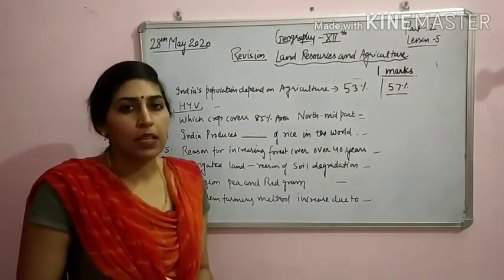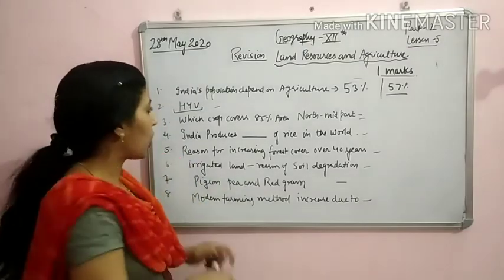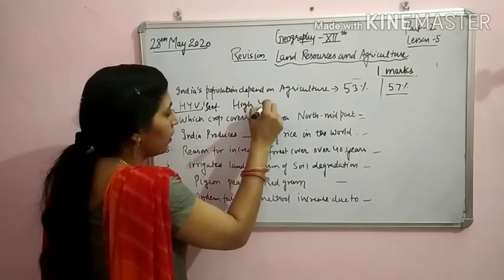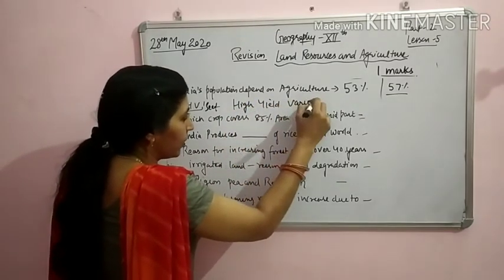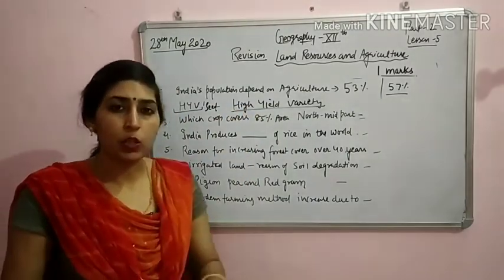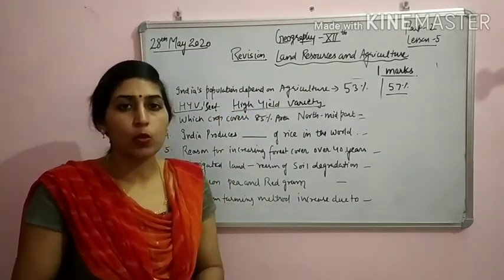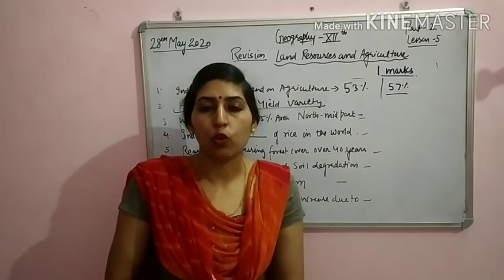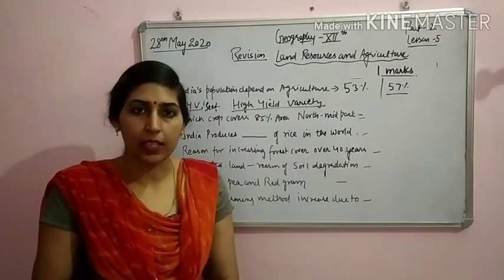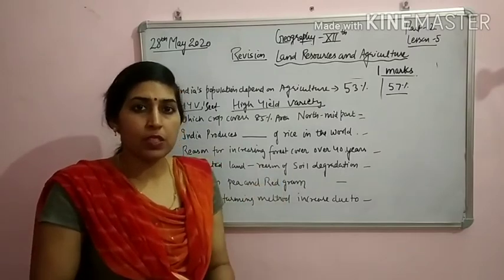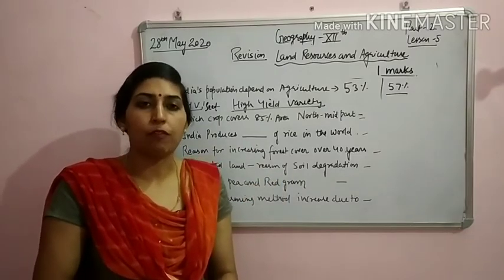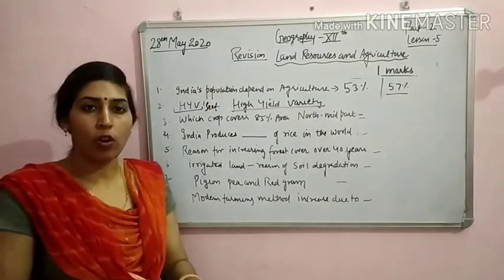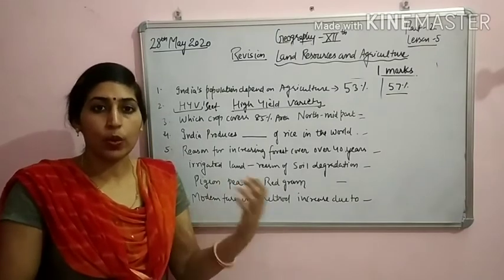HYV seeds — the full form is High Yield Variety. High Yield Variety means the seeds that are used to increase production are called HYV seeds. In India, HYV seeds were first used during the Green Revolution. Wheat HYV seeds came from Mexico and rice HYV seeds were brought from Philippines. This term stands for increasing yield and production.